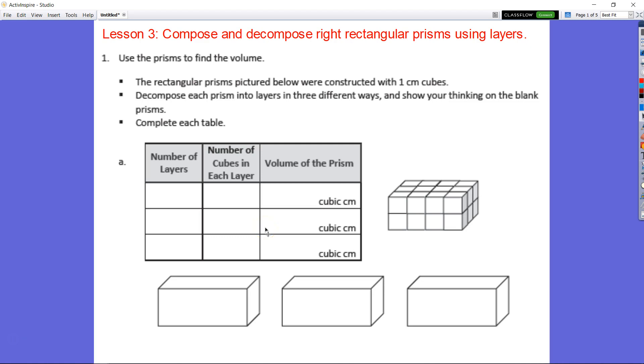Lesson 3. Our objective, once again, this is Lesson 3, Module 5, Topic A. This is the last lesson in Topic A. And we're going to compose and decompose right rectangular prisms using layers. Let's take a look here.